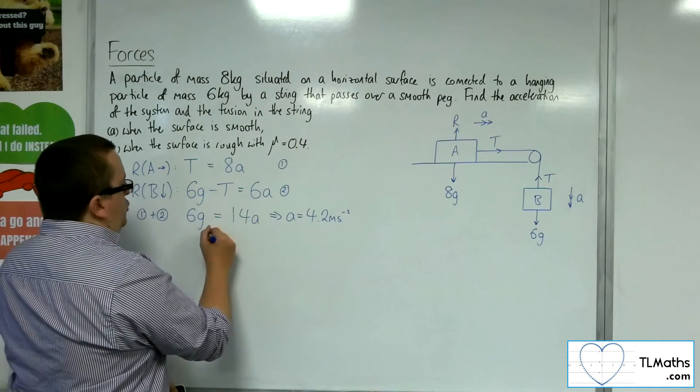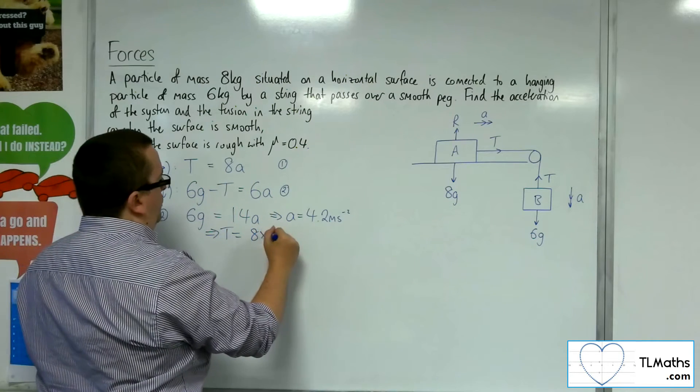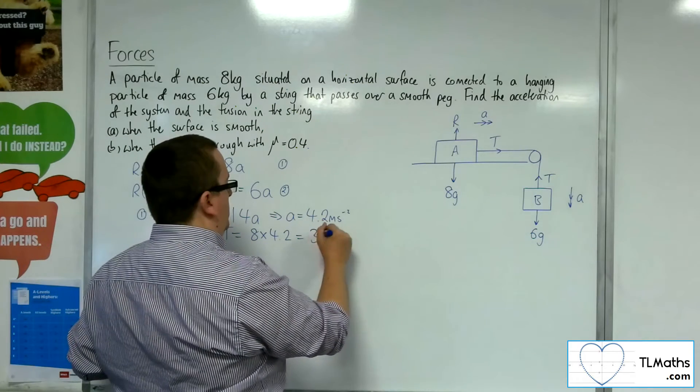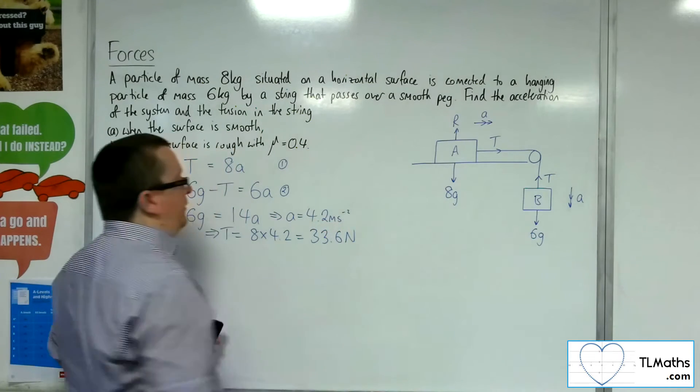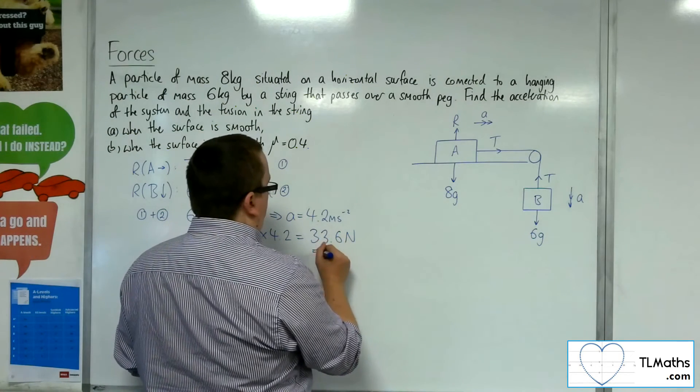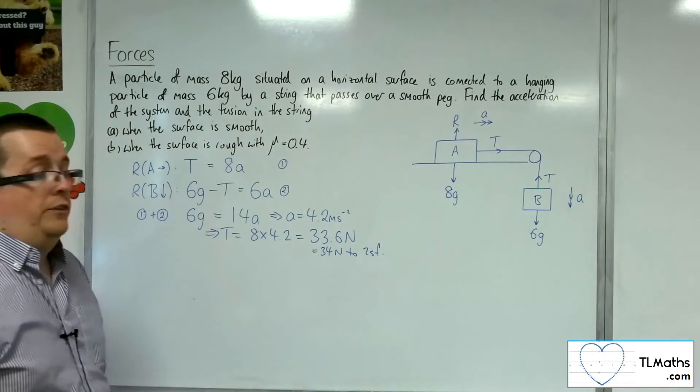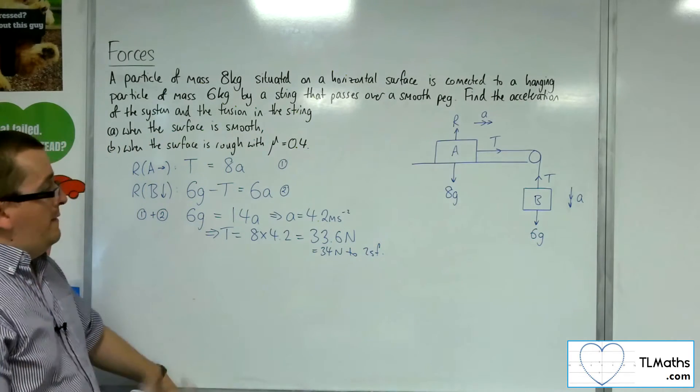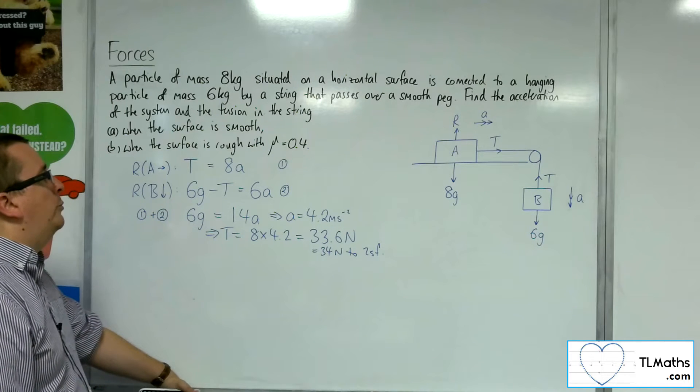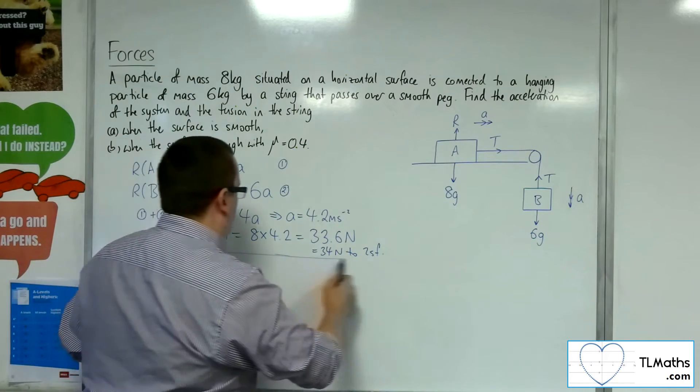Consequently, the tension is 8 lots of 4.2, so that gets me 33.6 newtons, which is 34 newtons to 2 sig fig. So seeing as we've rounded gravity to 2 sig fig, it's appropriate to round tension to 2 sig fig as well. So that is part A.